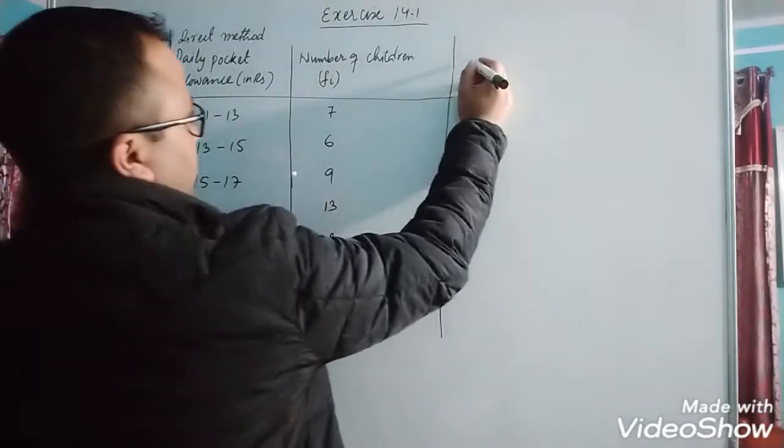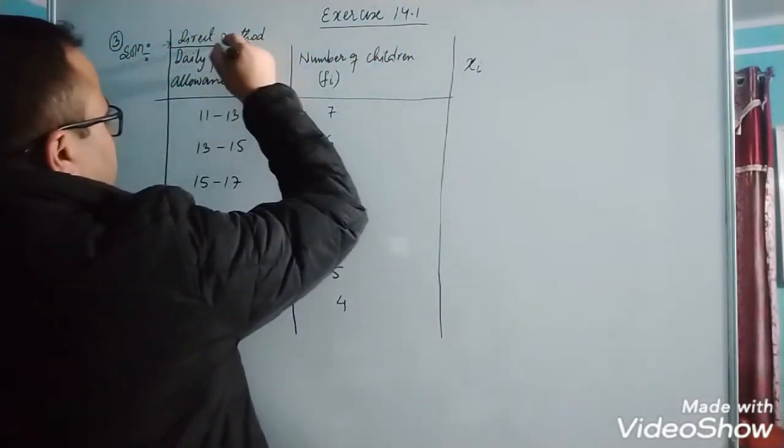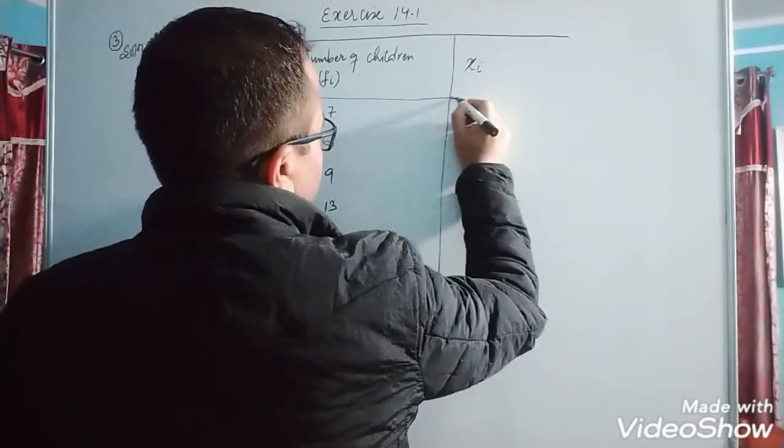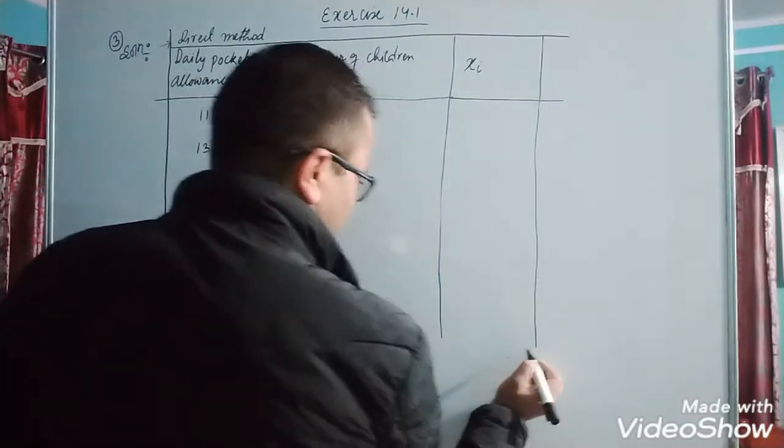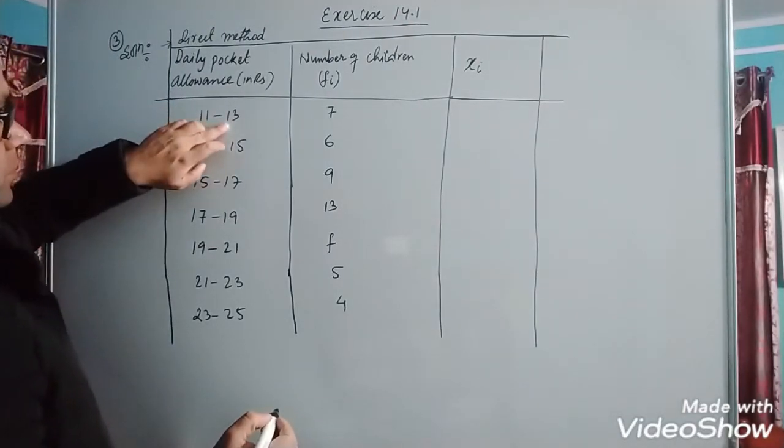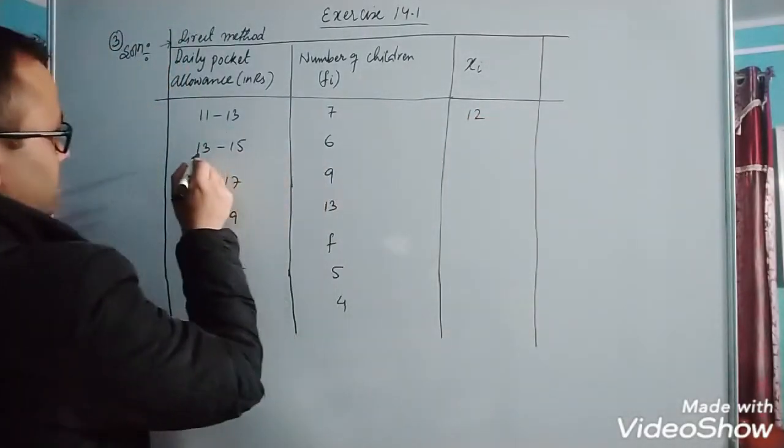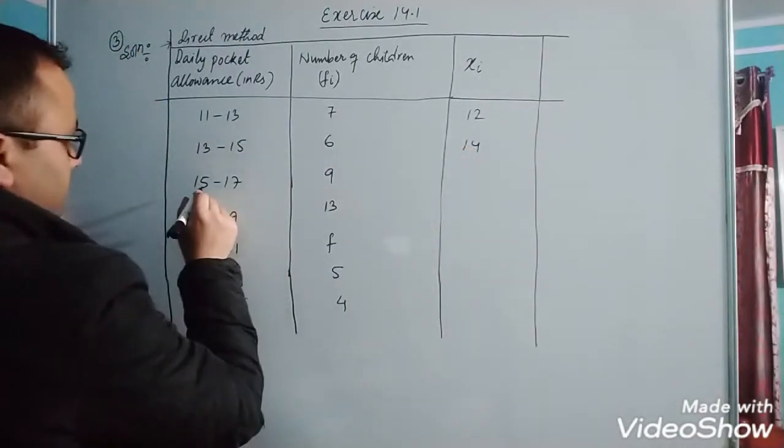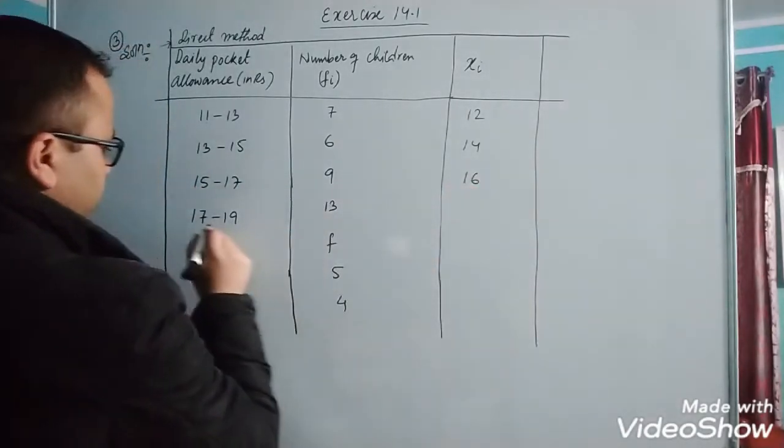First we will calculate xi. Xi is mid value of class interval. Mid value of 11 plus 13 is 24 divided by 2, which is 12. Next is 28 divided by 2, which is 14. Then 32 divided by 2 is 16. Next is 36 divided by 2, which is 18.